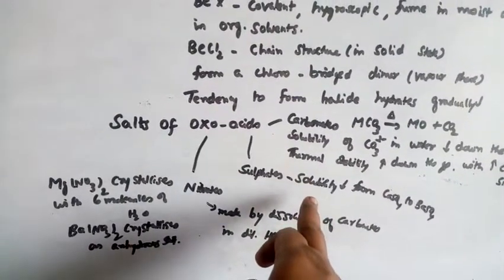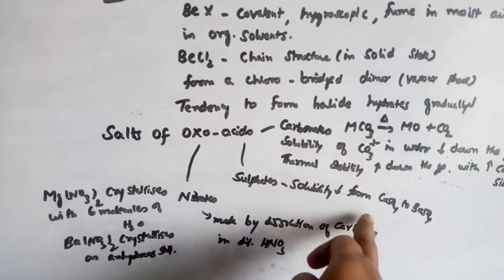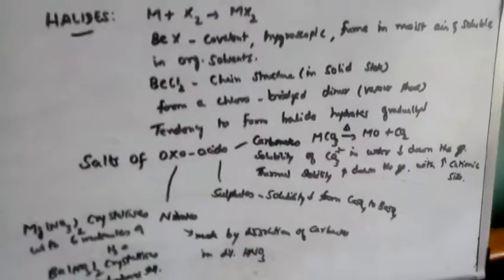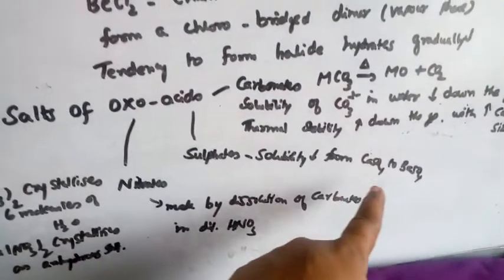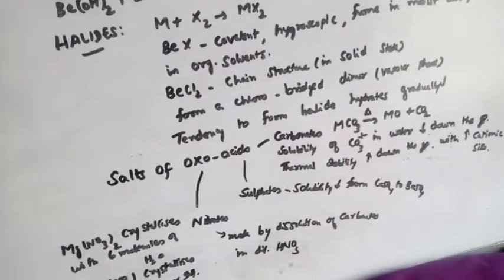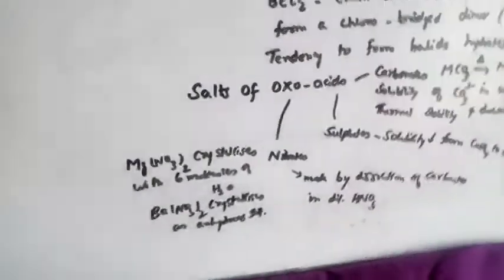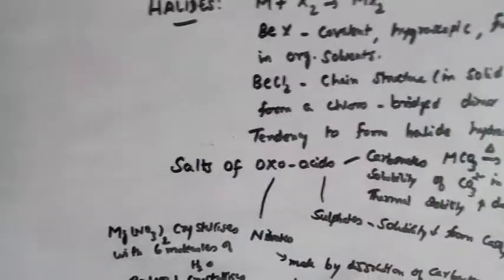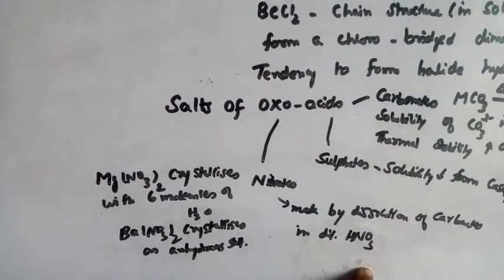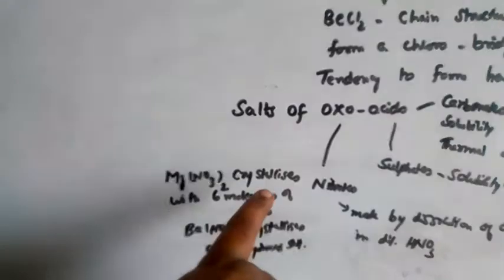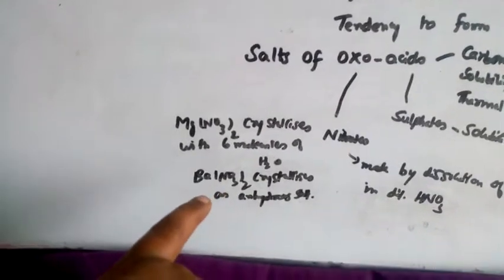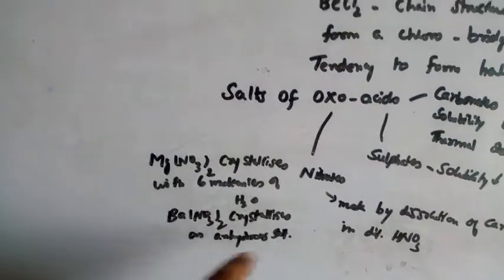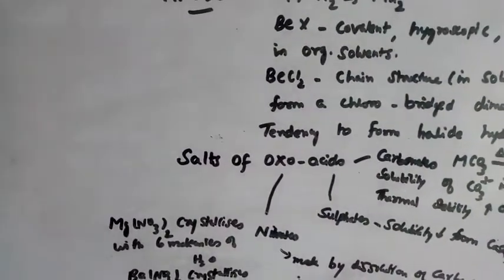For sulphates, solubility decreases from beryllium sulfate to calcium sulfate. For nitrates, they are generally obtained by dissolving carbonates in dilute nitric acid. For example, magnesium nitrate crystallizes with 6 molecules of water, whereas barium nitrate crystallizes as anhydrous. This shows that the tendency to form hydrates gradually decreases down the group.